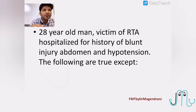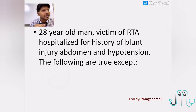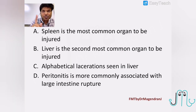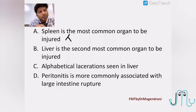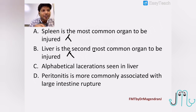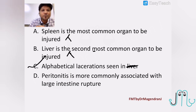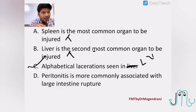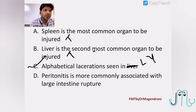A 28-year-old man, victim of RTA, is hospitalized with blunt injury abdomen and hypotension — which is true except? The spleen is the most common organ to be injured — yes, that's true. The liver is the most common organ affected in blunt trauma abdomen — that is also true. Alphabetical lacerations are seen with liver — no, friends, it is not liver; it should be spleen. That answer is the false statement. Alphabetical laceration means the laceration looks like L or Y, and these are very typically seen with the spleen, not the liver.